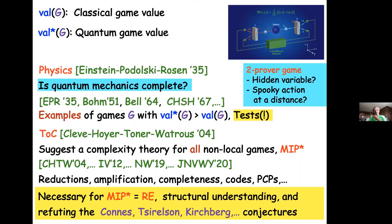This structural understanding — the flexibility of having many different problems and moving between them, using algorithms as subroutines — allowed proof that MIP* contains uncomputable languages, with amazing implications to mathematics. This structural understanding, reductions, and completeness results were essential to proving that MIP* equals RE.